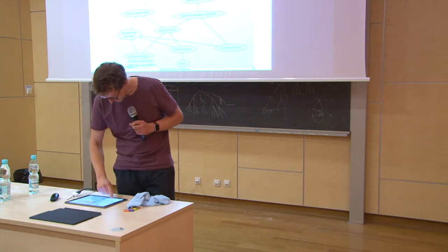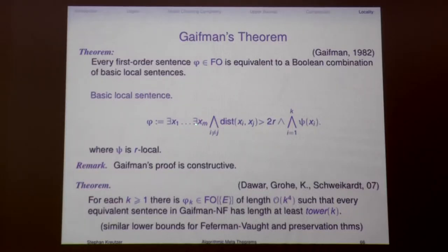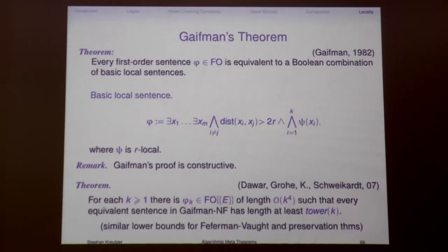Where we stopped yesterday was Gaifman's theorem, which says every first order formula is equivalent to a Boolean combination of basic local sentences. A basic local sentence says: I have M vertices in my graph, the distance between any pair of them is more than 2 times R for some constant R, and each vertex in its R-neighborhood satisfies a first order formula psi.